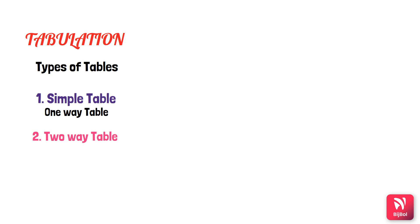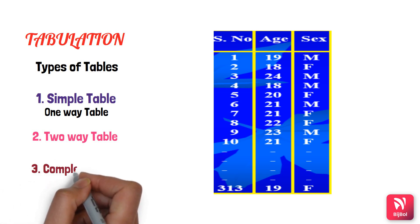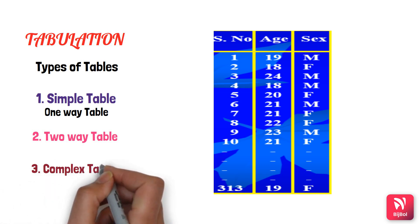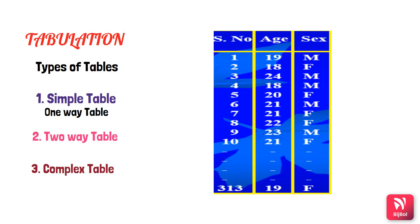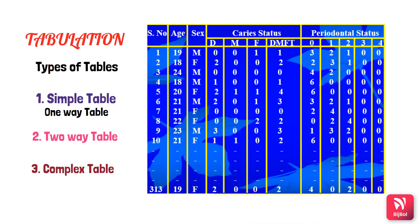The two-way table has two characteristics. Here we have age and gender — two characteristics at a time, so they are divided based on age and gender. The complex tabulation consists of many characteristics, such as age, gender, caries status, and periodontal status. This is how tabulation is done.